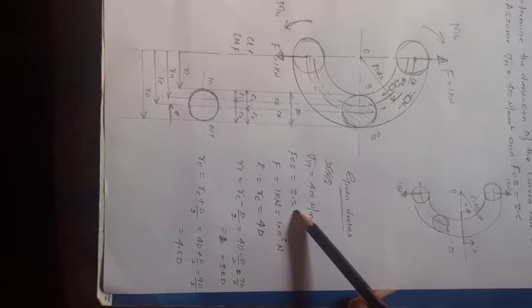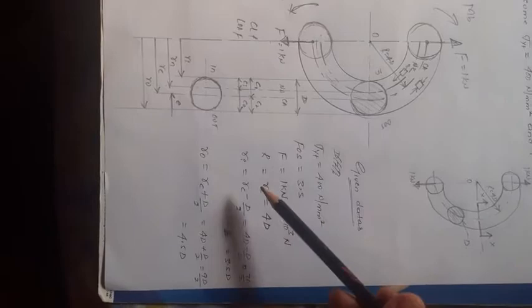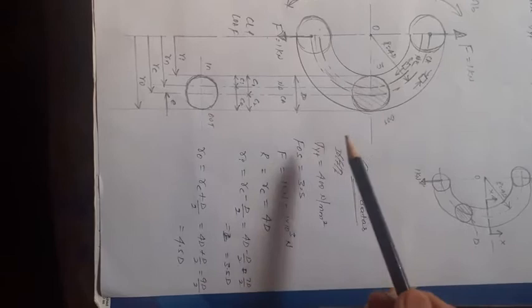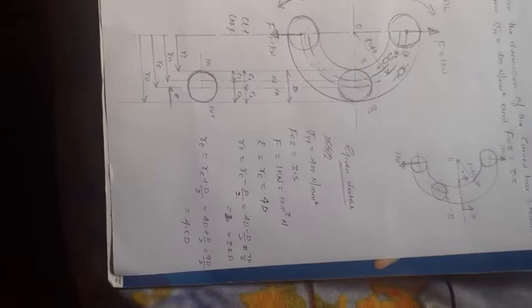R_C equals 4 times D. Now write R_i and R_0: R_i is R_C minus D/2, and R_0 is R_C plus D/2. Since sigma_yt and factor of safety are given, convert to allowable stress.